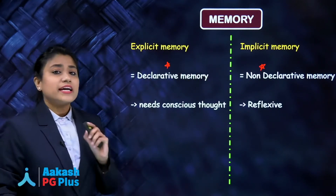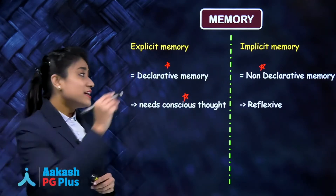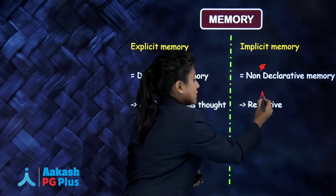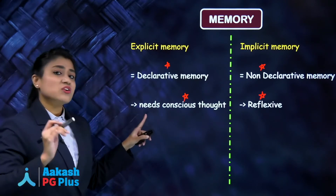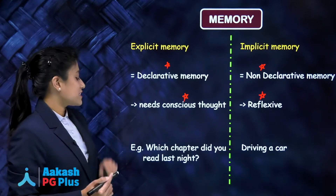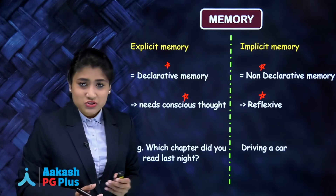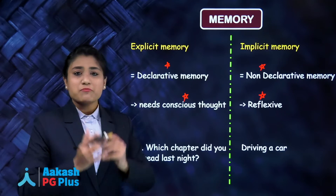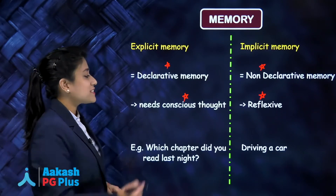Explicit memory needs conscious thought, and implicit memory is reflexive — it doesn't need any conscious thought. For example, explicit memory: if I ask you which chapter you studied last night, you will think and then give the answer. So that comes under explicit memory.